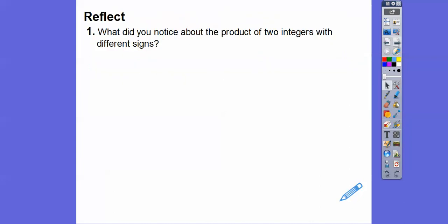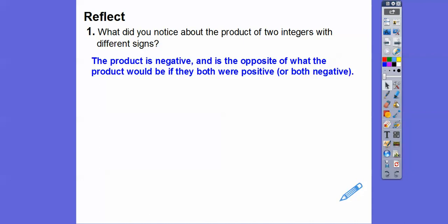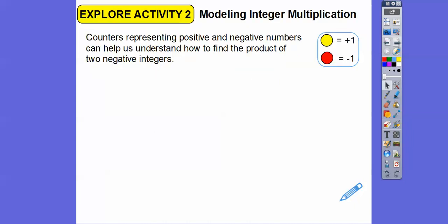So what did you notice about the product of two integers that had different signs? The product was always negative — it's the opposite of what the product would be if they were both positive. And we'll find out later in this lesson: a negative times a negative is actually a positive.